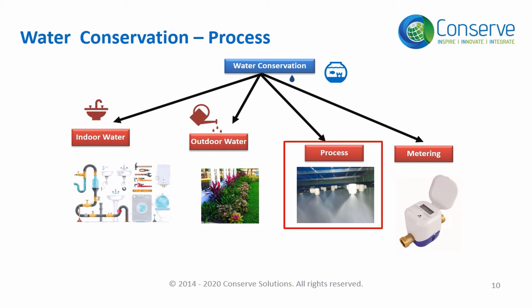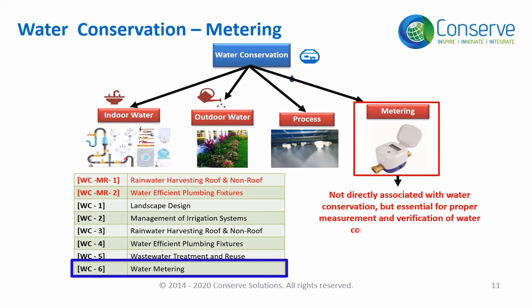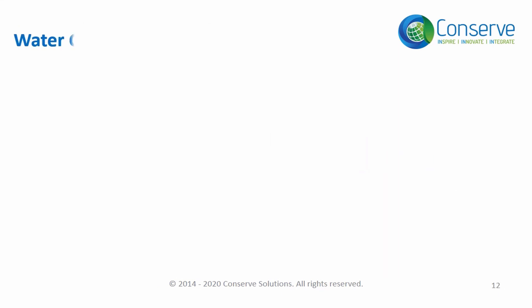Projects may use water for processes like cooling towers, commercial kitchens, and commercial laundry. The IGBC rating system does not address water conservation in process, so we will not discuss this in detail. Metering is not directly associated with water conservation but is an essential part of it for proper measurement and verification of water conservation strategies; it is addressed in Credit 6 — Water Metering.